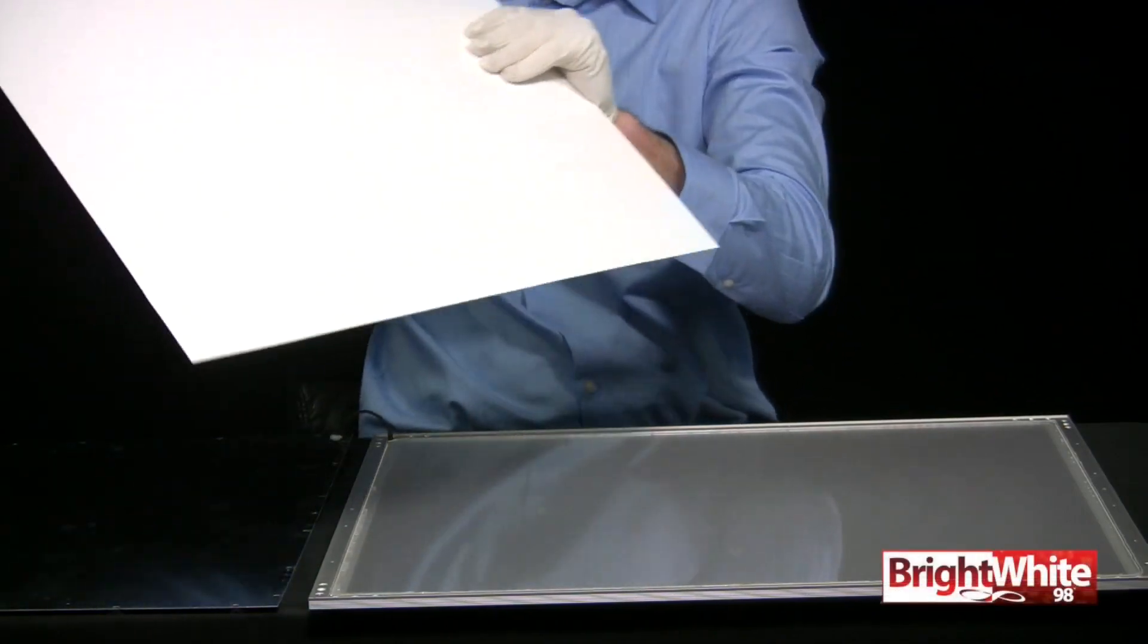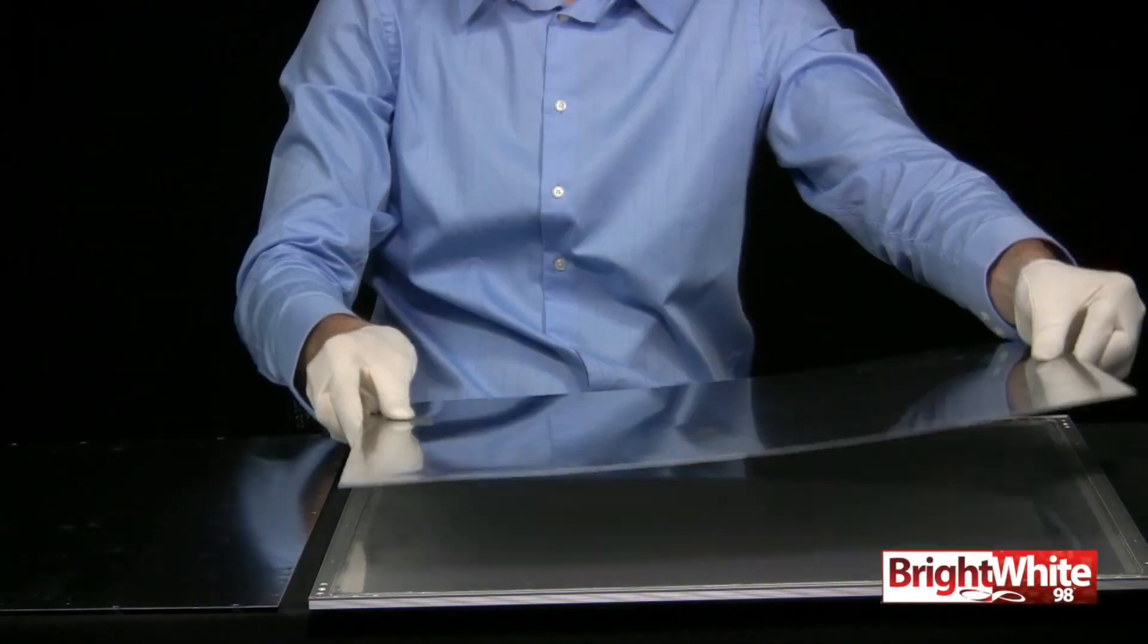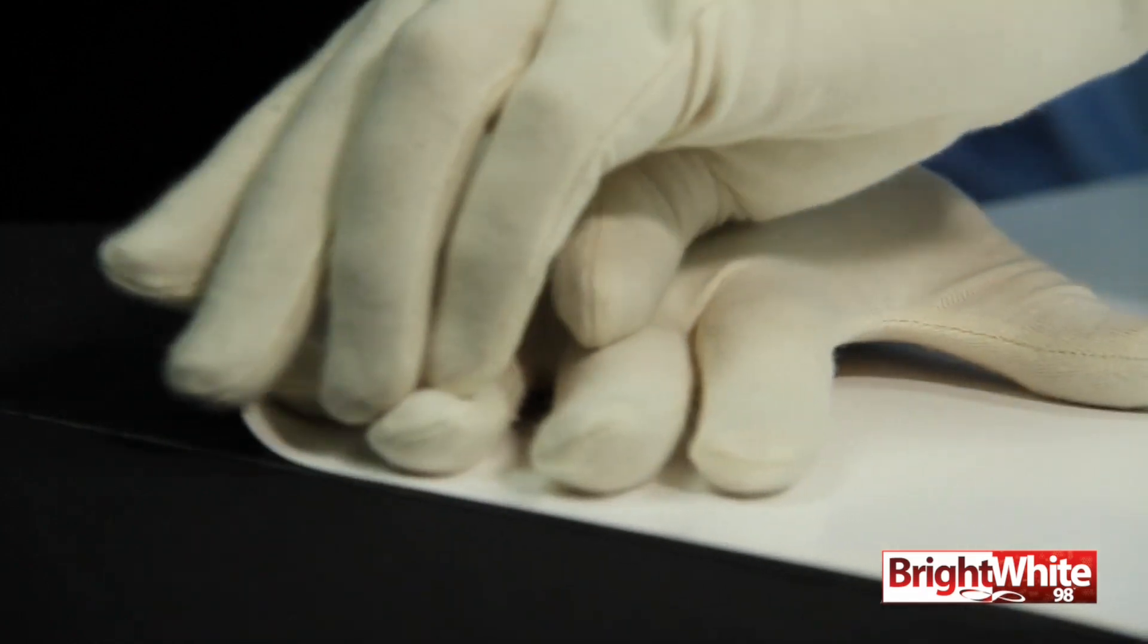Next, insert the bright white 98 reflector. For this light we're using bright white 98 laminated to aluminum.